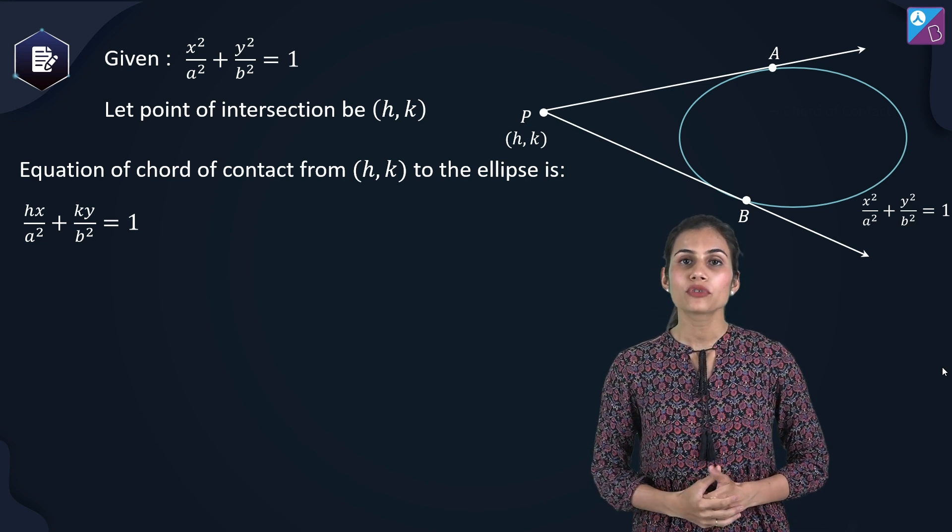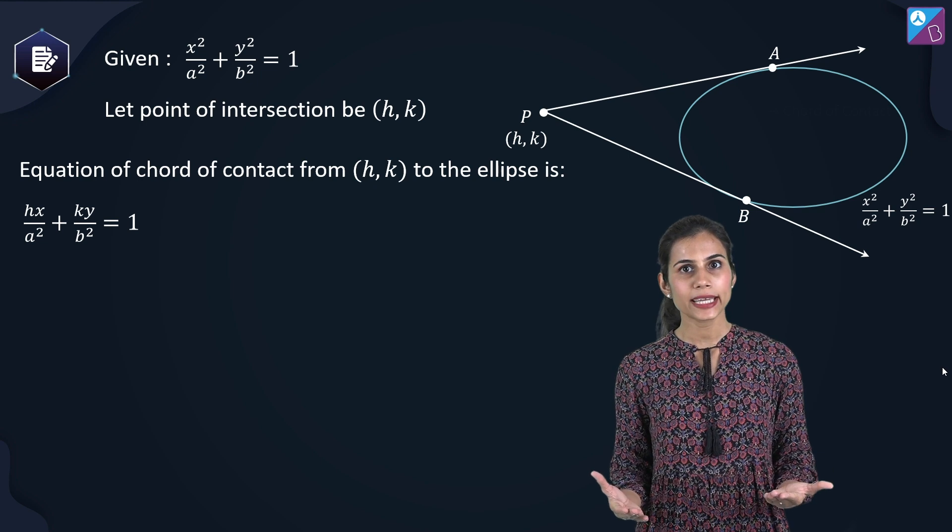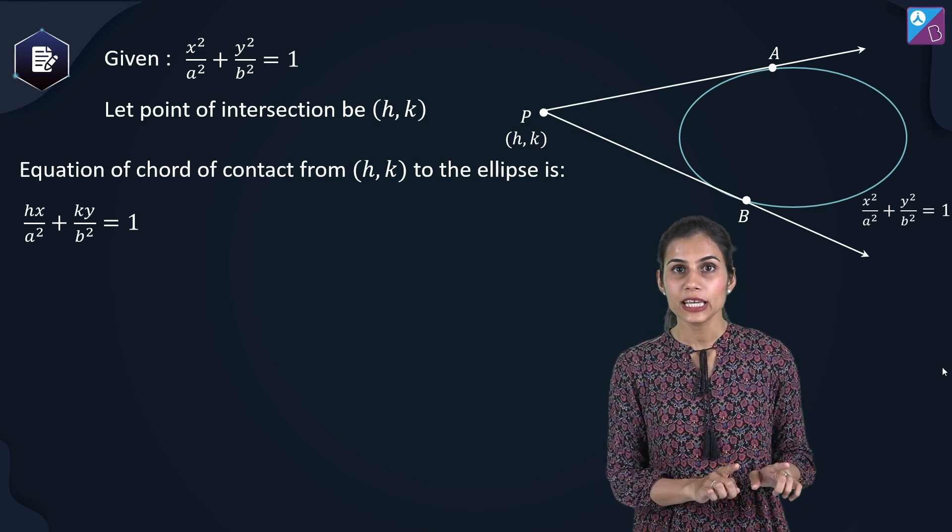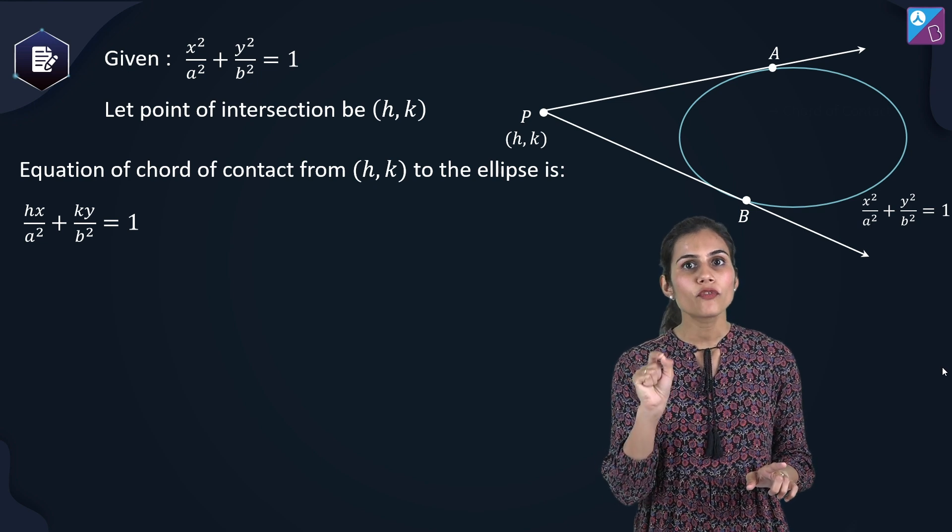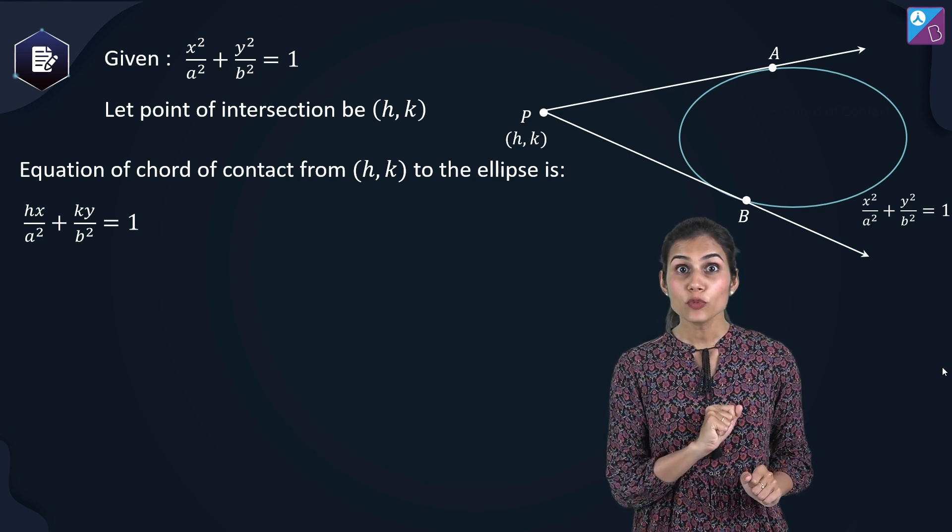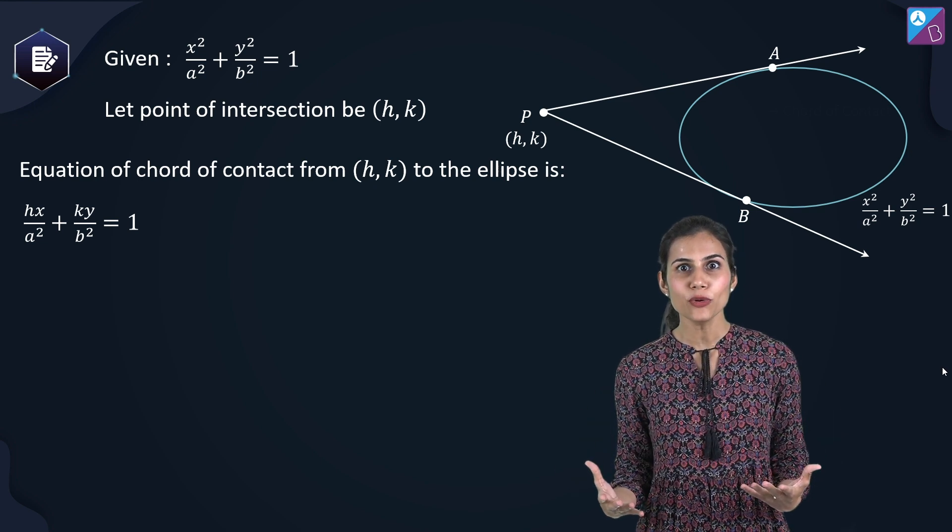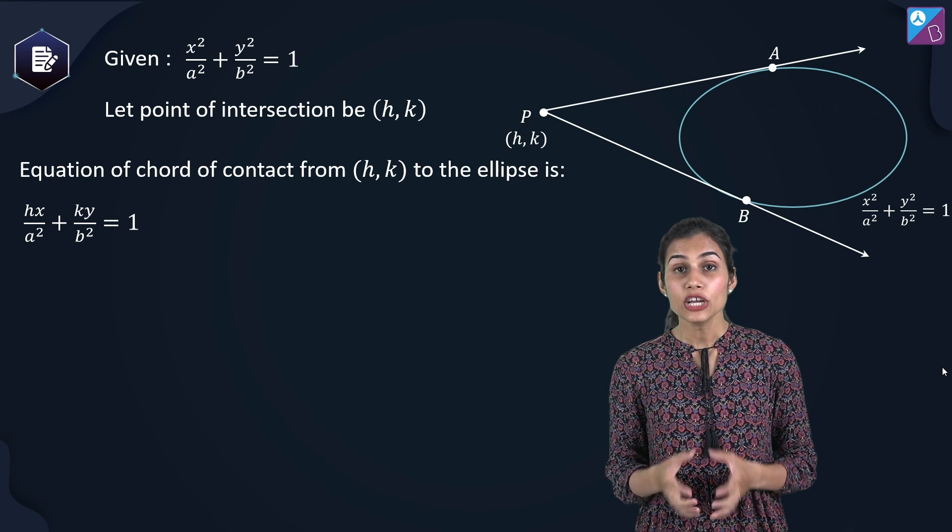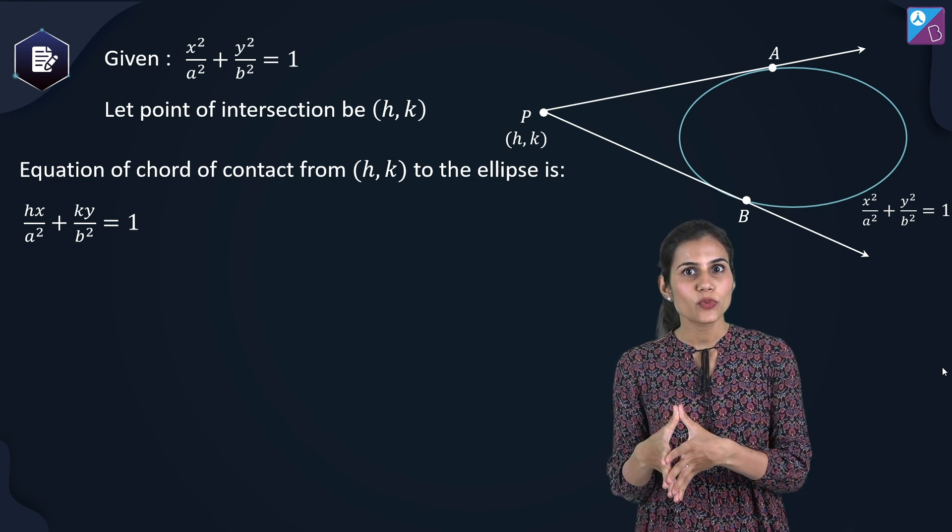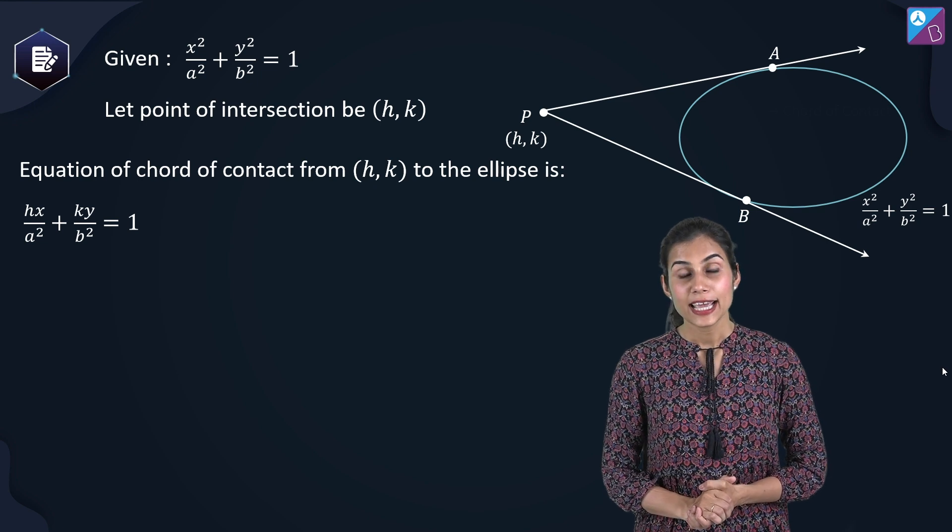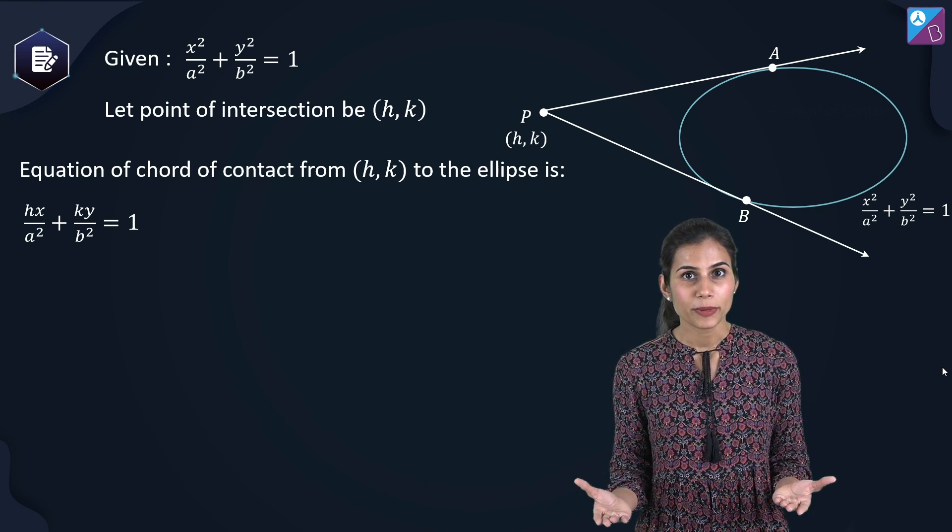So obviously we are going to consider its coordinates to be h, k. Now please realize that with respect to this point P, your AB is the chord of contact. So its equation will be t equals zero. And how do you get to t equals zero? By using the transformation, replace x square with x, x1, y square with y, y1 in the equation of the ellipse. Here x1, y1 is nothing but h, k.